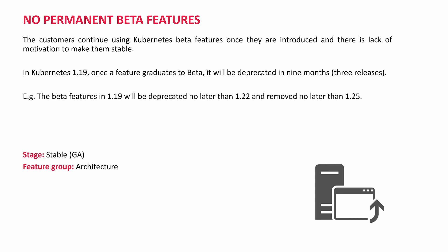No permanent beta features. In previous versions of Kubernetes, a beta was staying for a long time. Once developers started using the beta version, they became comfortable, so there was no motivation to make those APIs stable. In Kubernetes 1.19, once a feature graduates to beta, it will be deprecated in 9 months after 3 releases. For example, the beta feature in 1.19 will be deprecated in 1.22 and removed in 1.25. It gives some discipline in software development and how to use beta features. The beta feature should become stable, or the community should introduce a new feature to replace it — otherwise it will be deprecated. It's a stable, general availability feature in the architecture group.